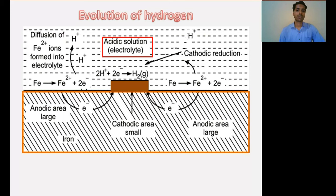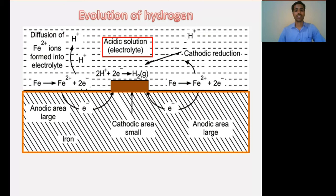Now in this case, the metal which is in contact with the electrolyte solution will behave as anode, and the metal which is not directly in contact with the solution will behave as cathode. The anodic and cathodic areas form on the metal surface because of an uneven chemical surface.